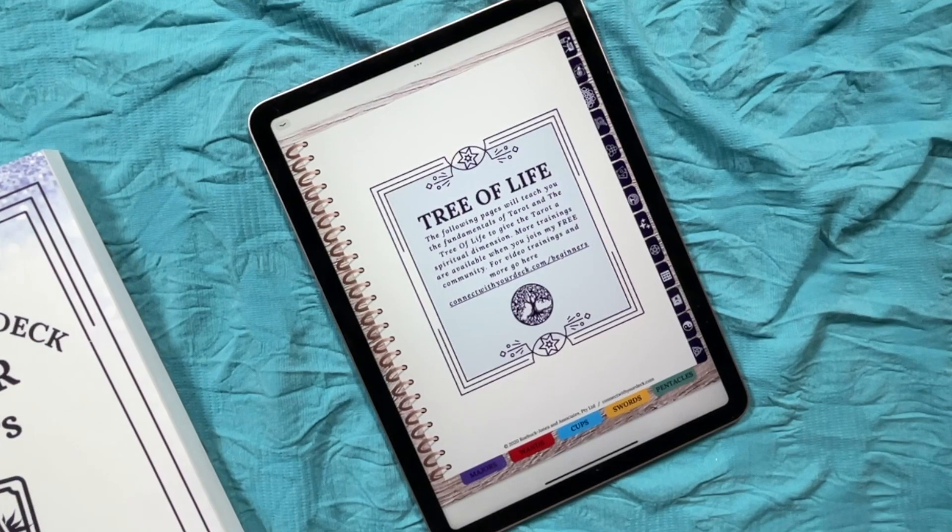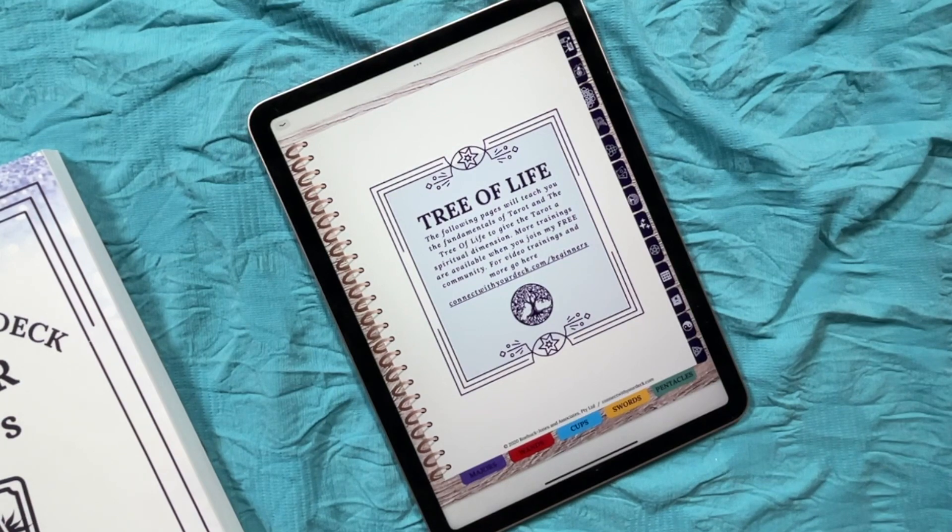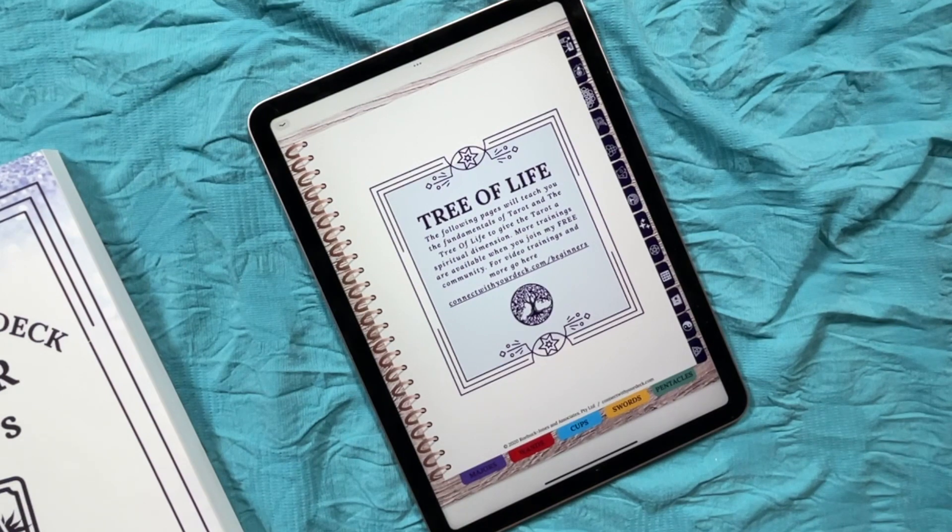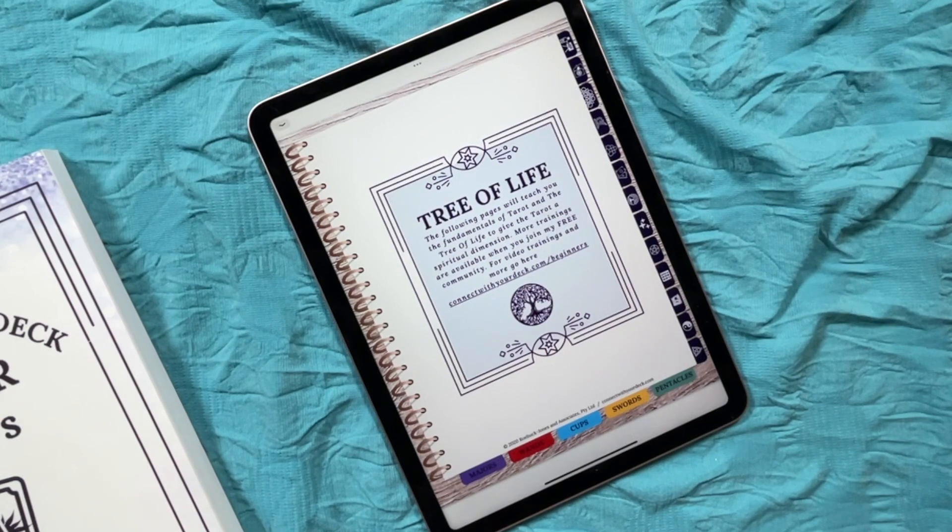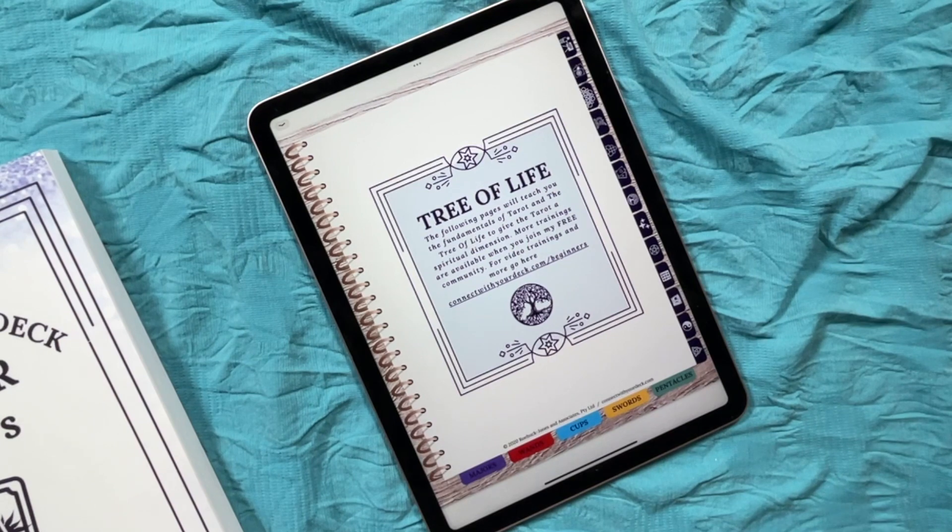So we are up to the next section of our course on Tarot for Beginners and we're going to be looking at the Tree of Life because I don't think we can talk about the Tarot without understanding a little bit about the Tree of Life, why the Tree of Life is significant and how it relates to the Tarot. Did I find it life-changing to place all the cards onto the Tree of Life and look at all of the Jewish letters? Probably not.